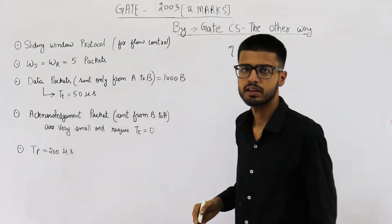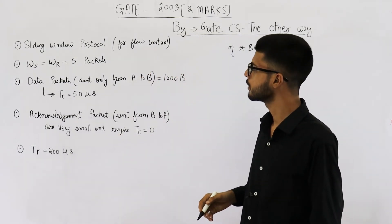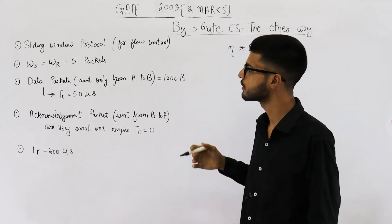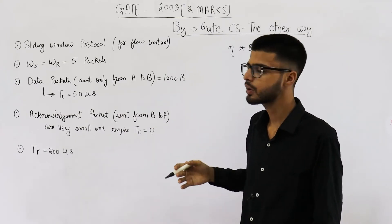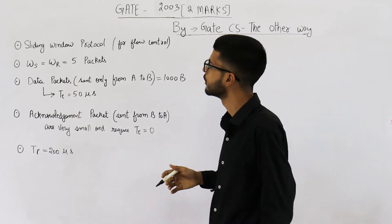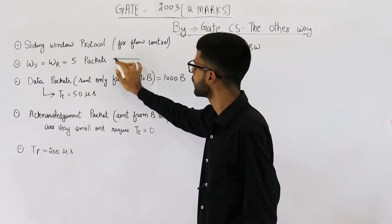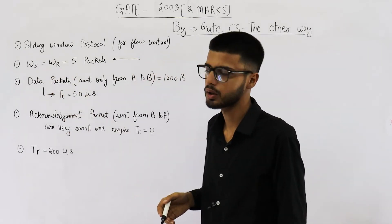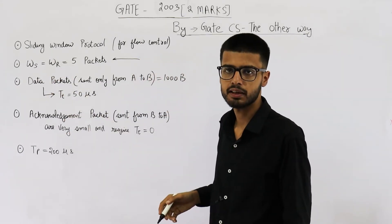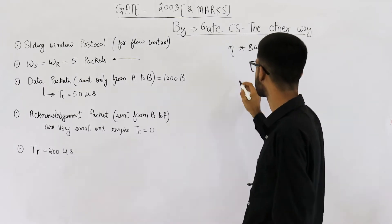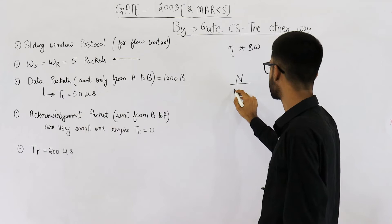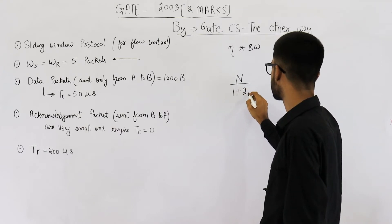If these things are given in the question, they are saying sliding window protocol is used, but we don't know is it selective repeat or is it go back N. That can be determined from here. When both sender window and receiver window sizes are equal, it is always selective repeat. So here we are using selective repeat. In selective repeat, the formula for efficiency is n upon 1 plus 2a.